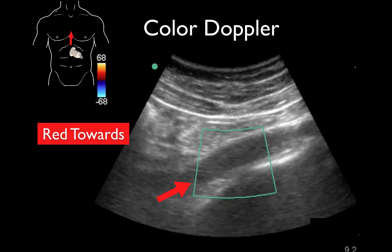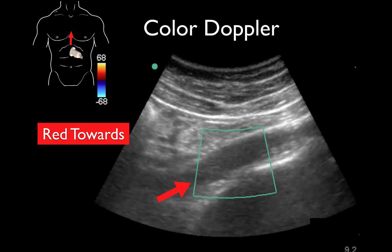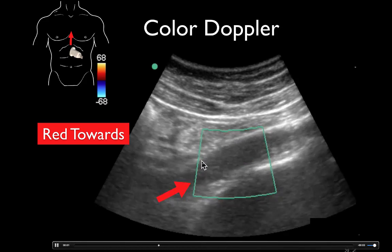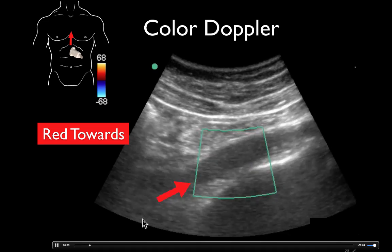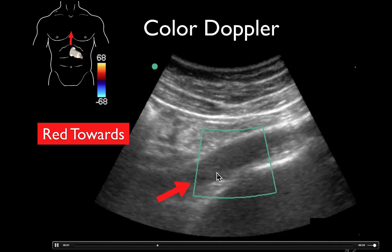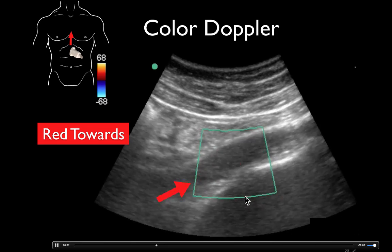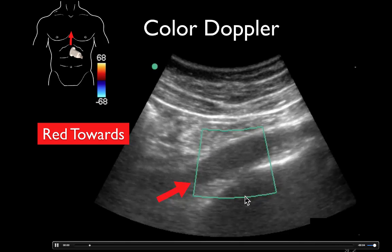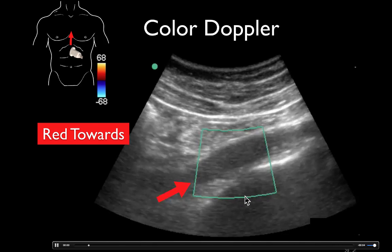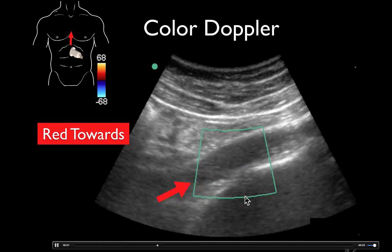In this example, we're on the exact same patient, but instead of angling toward the feet, we've angled the probe up toward the head. Now the aorta is coming toward us, and we see red color within the vessel. This is the exact same aorta. Remember, vessels do not light up one color or the other — it depends entirely on whether the blood flow is coming toward or away from the probe. Before we saw it in blue, now we're seeing it in red.